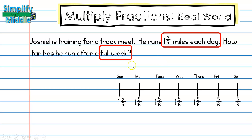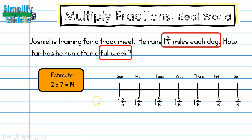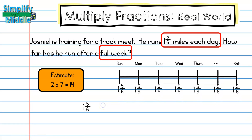This is going to help me create an estimate. I can see I have seven days, and I can see that I have one and five-sixths for each of those days, so I'm going to round this to two. My estimate is two times seven equals fourteen. Now let's go ahead and multiply. One and five-sixths converts to eleven-sixths, and seven can be written as seven over one. Looking across, I don't have any common factors, so I'll multiply straight across.